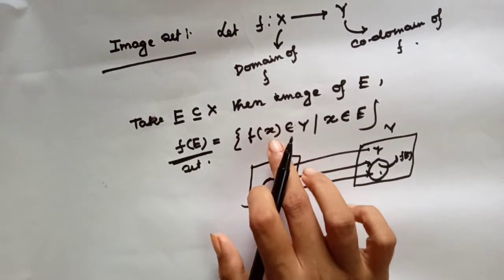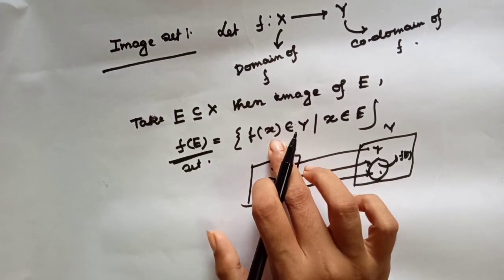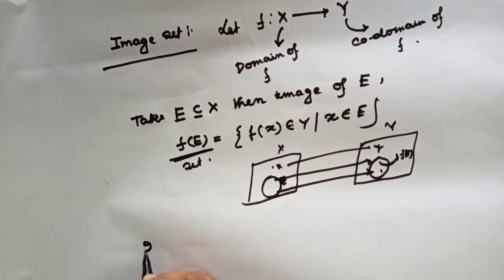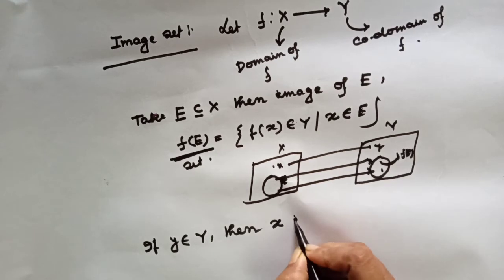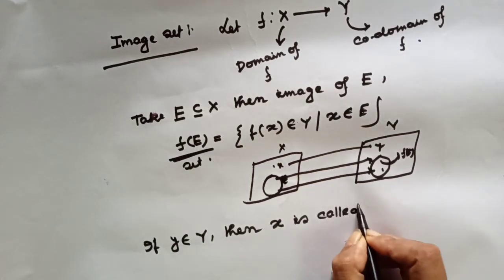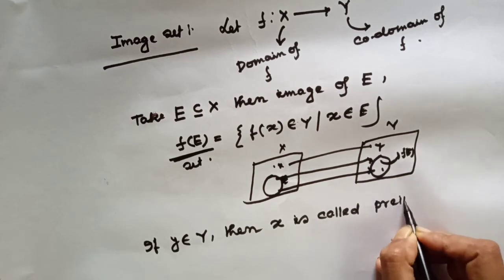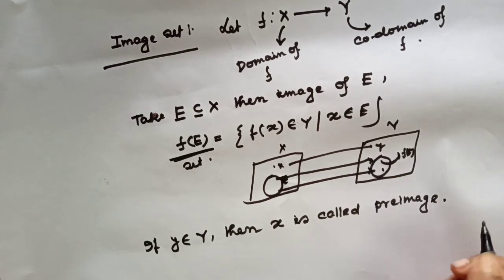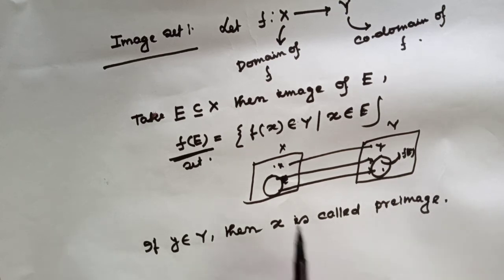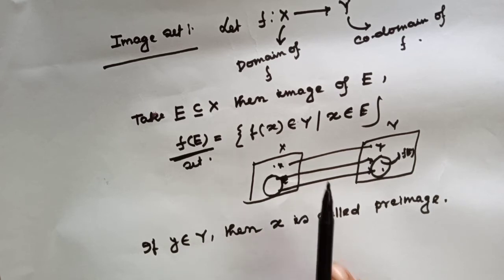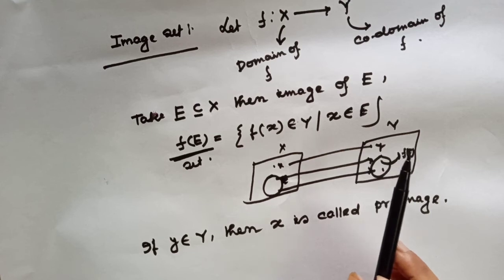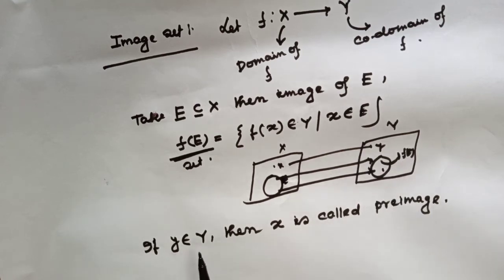This is the image set. What is a pre-image? If y belongs to Y, then x is called the pre-image. From the definition of a function, for each x there exists a unique image. But given y belonging to Y, we can have several pre-images.